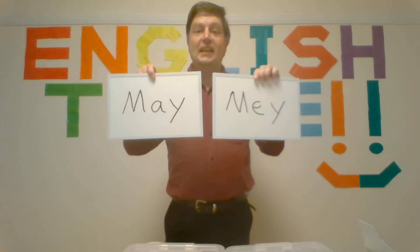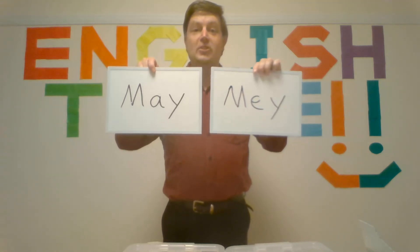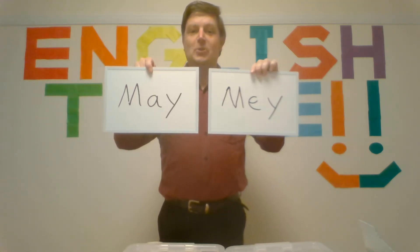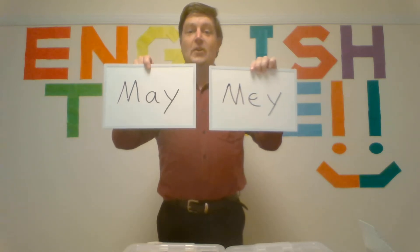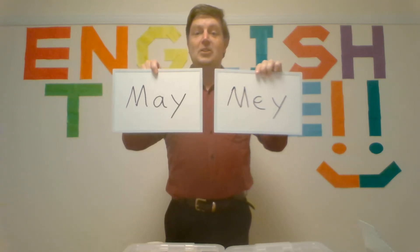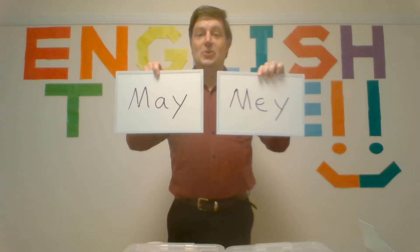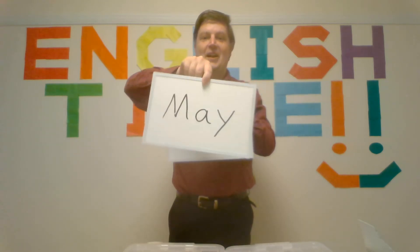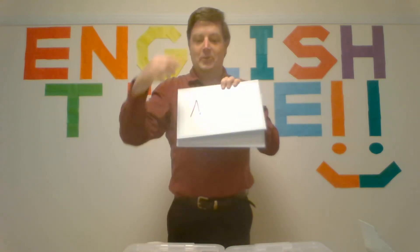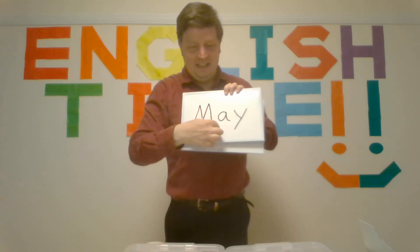For me. Dogatsu in Japanese. Which is correct? Five seconds. Five, four, three, two, one. The answer? May. With an A.